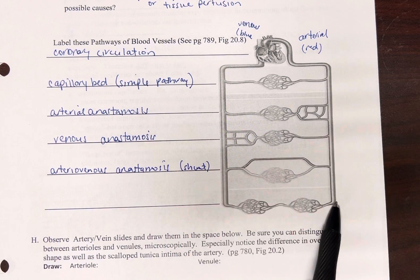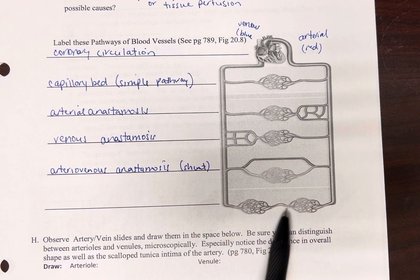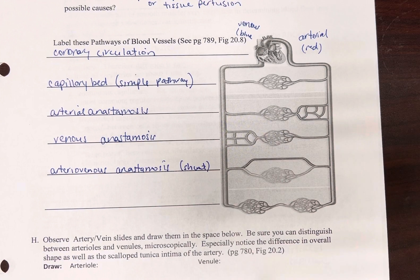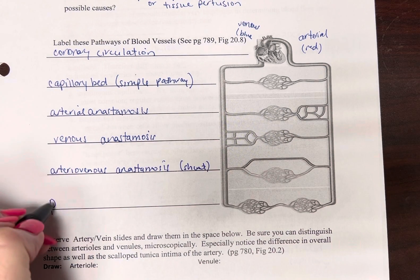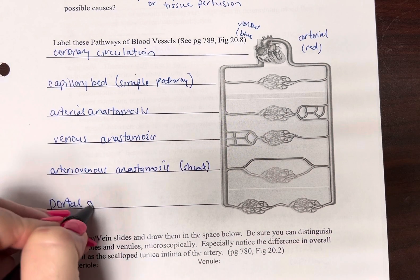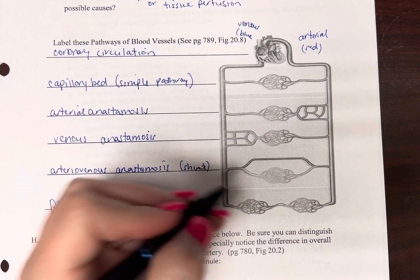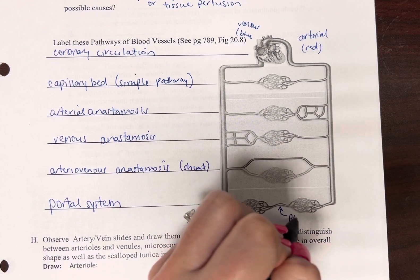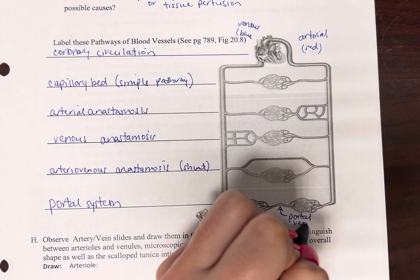All right, and here we have one capillary bed. Comes out of the capillary bed and goes into another one before it heads back to the heart. This is going to be your portal system. And it's important here, so write it down. This portion that connects these two capillary beds is called a portal vein.